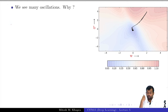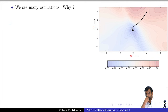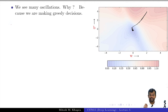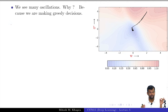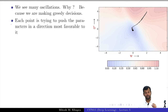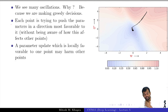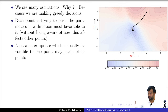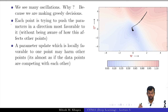Why are there oscillations? Each click corresponds to one data point. Because we are making greedy decisions — we look at one point, it says move in this direction to decrease the loss with respect to me, and we blindly move that way. Then the next point says move in a different direction, and we move again. All these points are trying to make things better for themselves without thinking about the other points — they are competing with each other. A decision locally favorable for one point may not be good for another, hence these tiny oscillations, which are the stochastic noise.